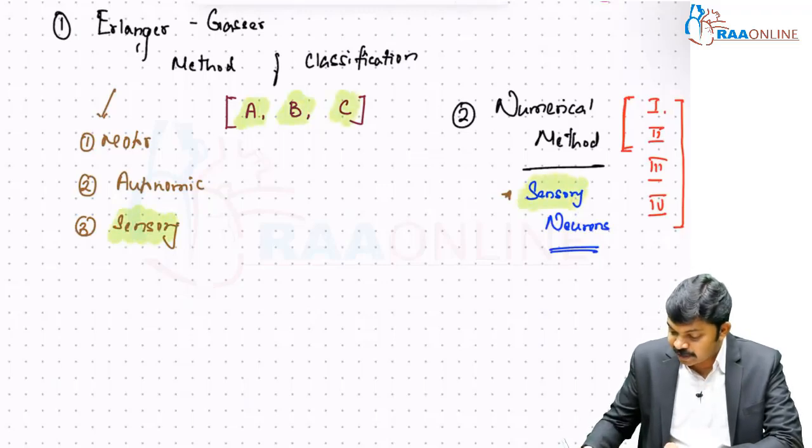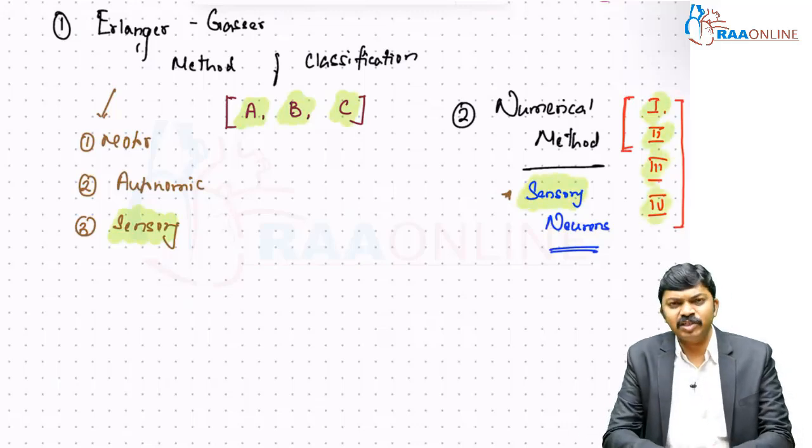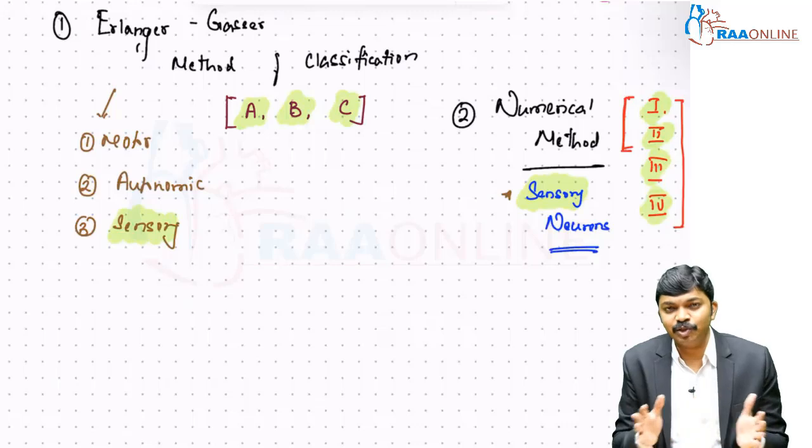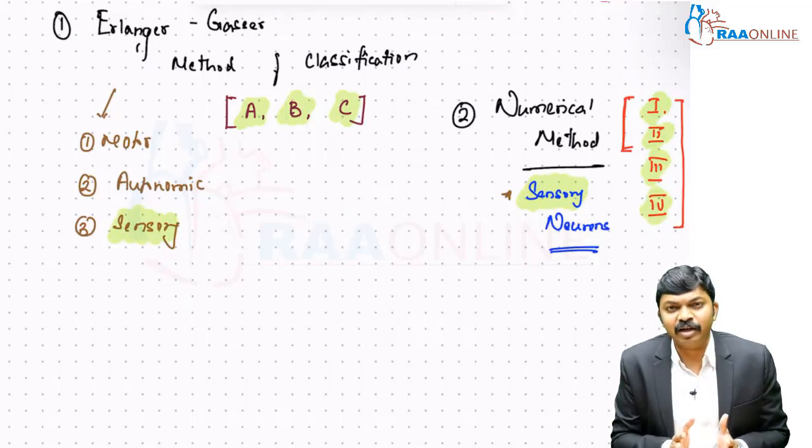The same sensory neuron is getting categorized as 4 varieties when it comes to numerical method. It's just the way different systems categorize neurons. There is absolutely nothing to get confused.